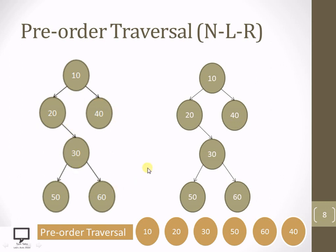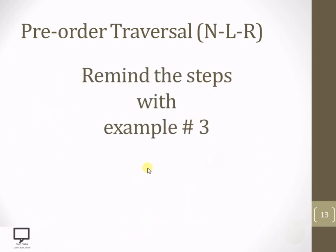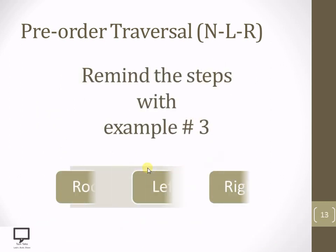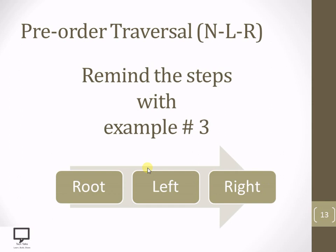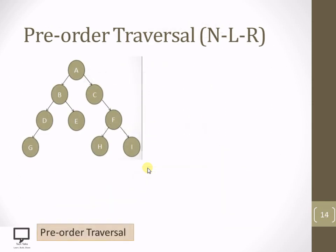Now let's move to Example 3. Reminder steps: root, left, right. This is the tree given for reference. In this section, I am going to provide the pre-order traversal of the given tree. Can you imagine what will happen? Let's start.